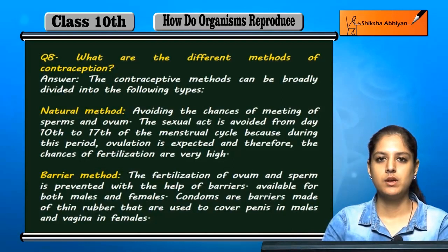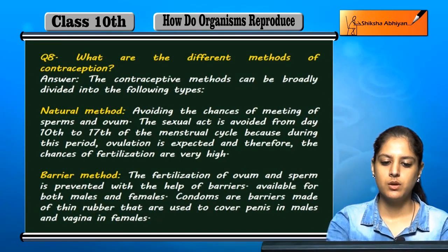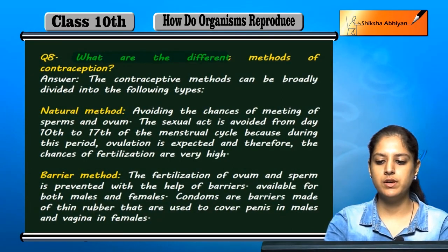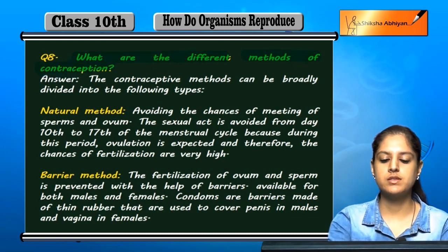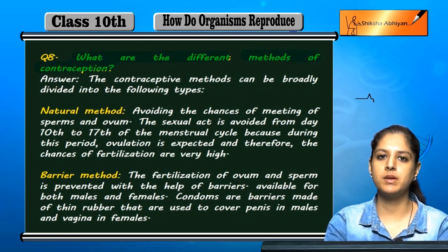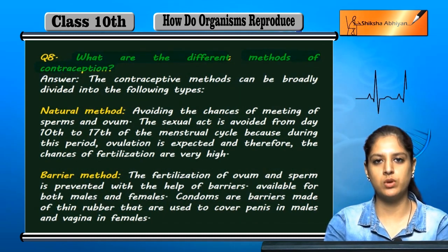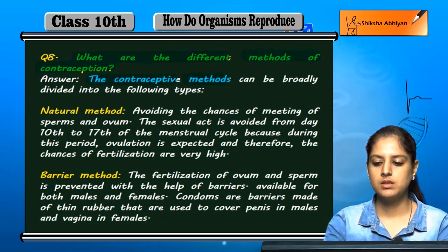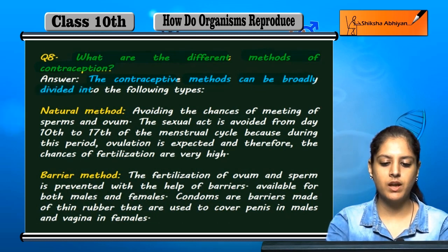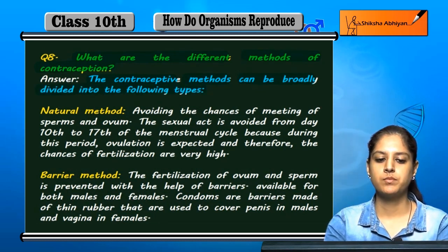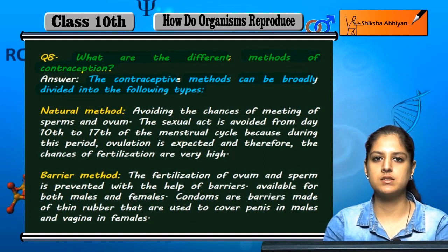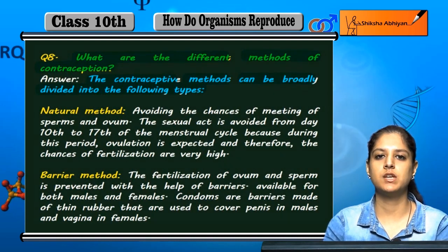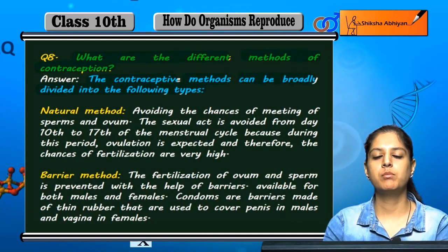What are the different methods of contraception? Contraception methods can be broadly divided into the following types, which we can divide into types of contraception and embryo generation prevention.